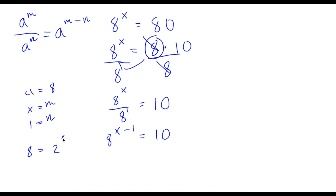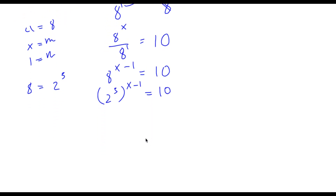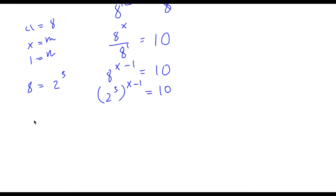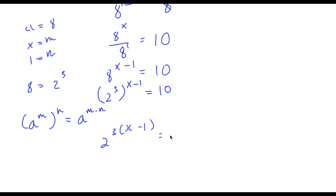Now 8 here is the same thing as 2 to the power of 3. So I'm going to rewrite 8 to the power of x minus 1 as 2 to the power of 3, to the power of x minus 1, is equal to 10. Now if we have something in the form a to the power of m to the power of n, this is the same thing as a to the power of m times n. So 2 to the power of 3 to the power of x minus 1 is the same thing as 2 to the power of 3 times x minus 1, is equal to 10.